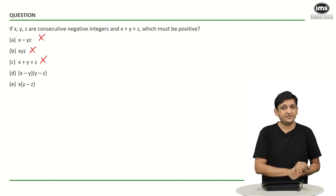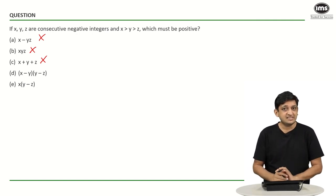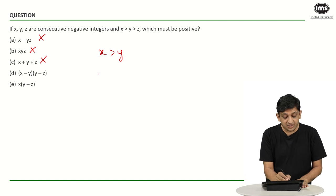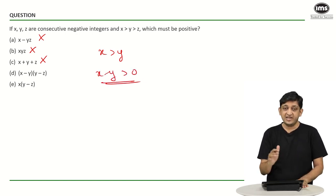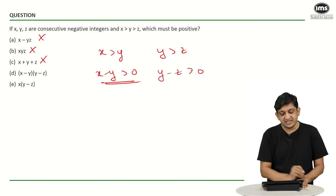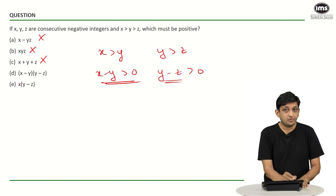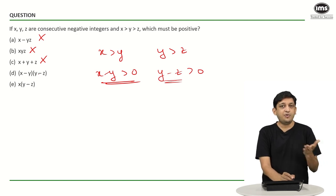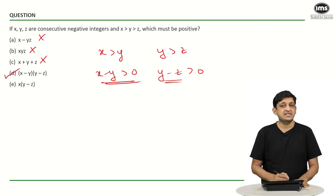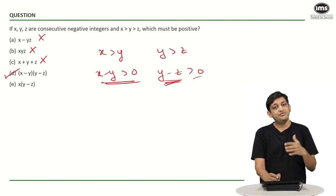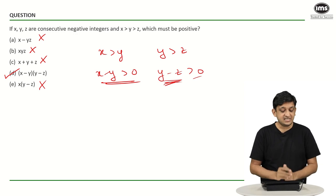We are left with Options D and E. For Option D (X-Y)(Y-Z): since X > Y, subtracting Y from both sides gives X-Y > 0, so X-Y is positive. Since Y > Z, Y-Z > 0, so Y-Z is positive. Two positive numbers multiplied together give a positive result — so Option D is correct. For Option E (X × (Y-Z)): X is negative and Y-Z is positive, so their product is negative. Option 5 is wrong. The correct answer is Option D.